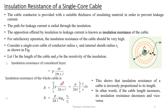The insulation resistance of the whole cable is obtained by integrating from R1 to R2: R equals integral from R1 to R2 of Rho divided by 2 pi L, times 1 over x dx. The insulation resistance decreases as cable length increases, and increases as insulation thickness increases.